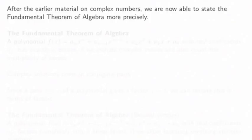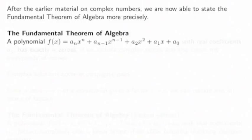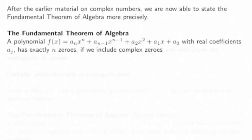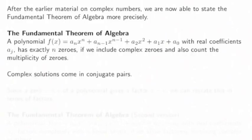After the earlier material on complex numbers, we're now able to state the fundamental theorem of algebra more precisely. The fundamental theorem of algebra says that if you're given a polynomial f(x) of degree n with real coefficients aᵢ, it has exactly n zeros if we include complex numbers and if we also count multiplicity. And complex solutions come in conjugate pairs.